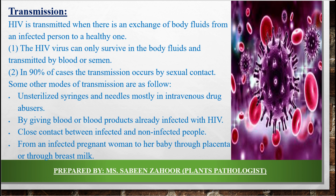Close contact between an infected and a non-infected person can also transmit HIV — if someone in a sexual relationship is infected, the healthy one can also be attacked by the virus. The next mode is from an infected pregnant woman to her baby through the placenta or through breast milk. The mother during pregnancy can transmit HIV through breast milk by the process of breastfeeding.